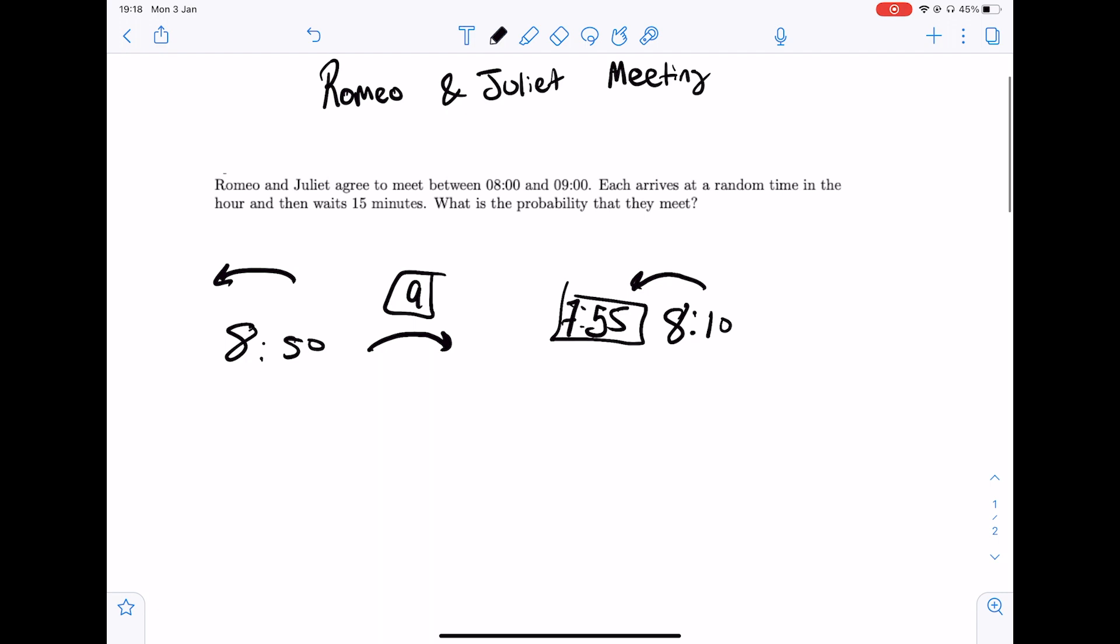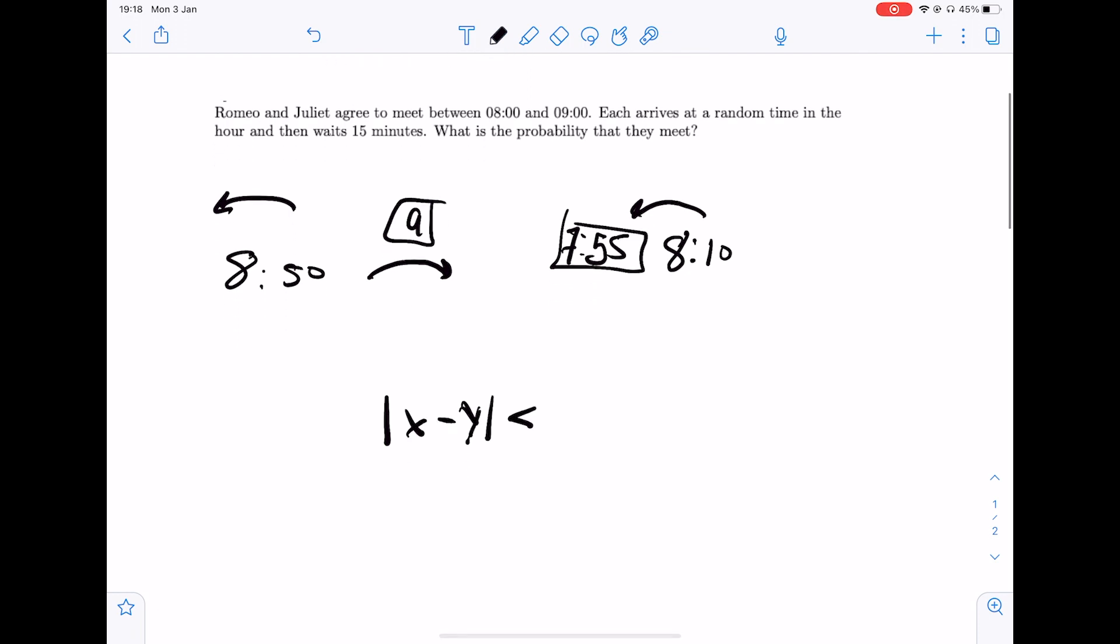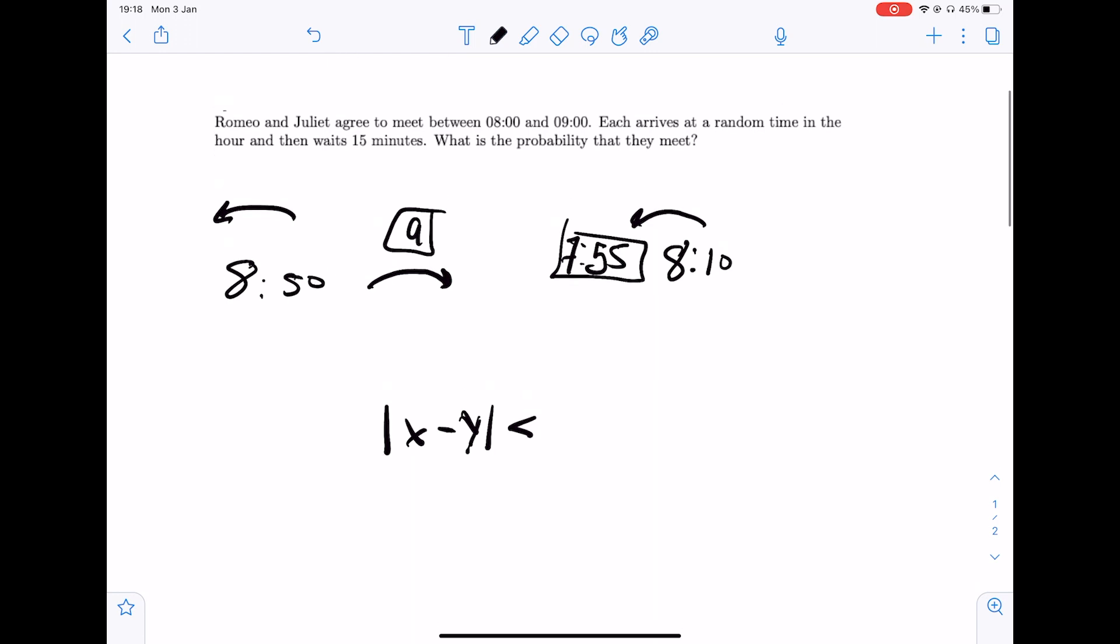So we can essentially only think about this as well that each person can only wait 15 minutes before or after. So this is just going to be x minus y modulus is less than 15 over 60 which becomes a quarter.